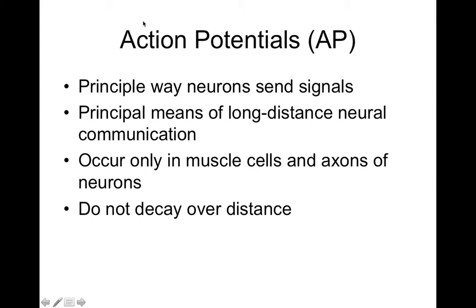We're going to talk about action potentials. Action potentials are the principal way that neurons send signals, and it's a means of long-distance communication. The signal doesn't decay over time and distance — it stays the same amplitude. So it's always the same blip, which means the information doesn't decay. You don't lose information with action potentials.